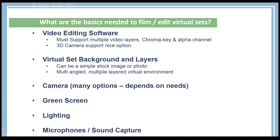For the basics needed to film and edit virtual sets, you first need video editing software that supports multiple video layers, chroma key, and alpha channels. Having a 3D camera feature is also a nice option. Today we'll be using After Effects, which has a 3D camera. HitFilm 3 Express, which is actually free, also has 3D camera support — so you don't necessarily need to spend a lot of money.